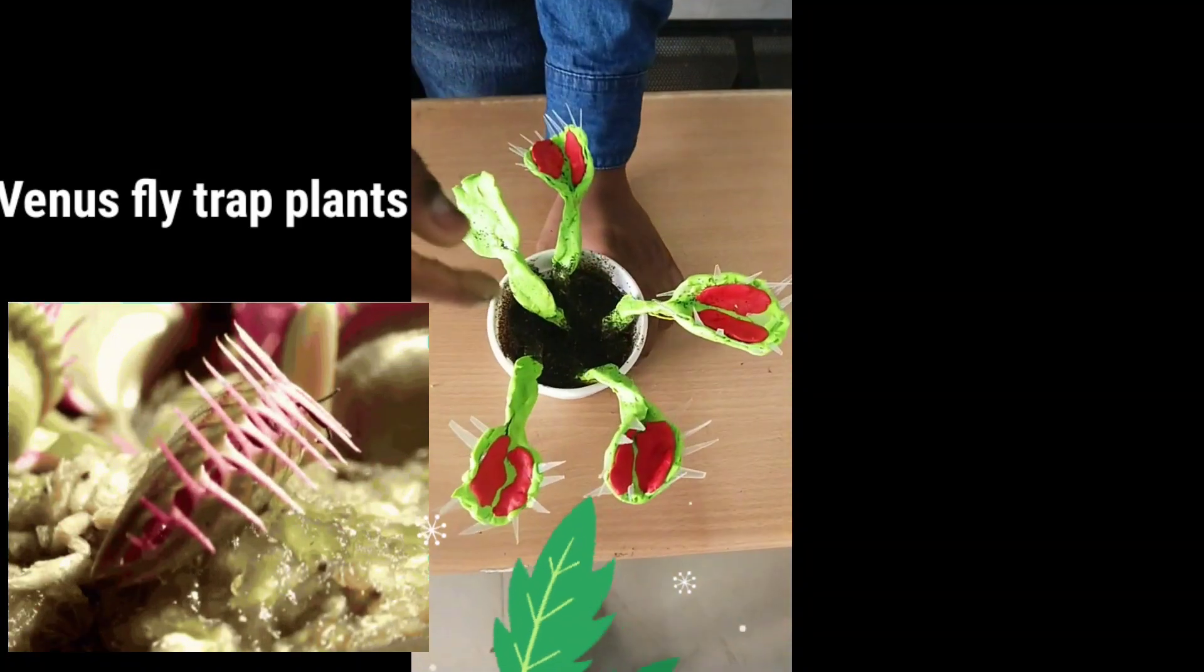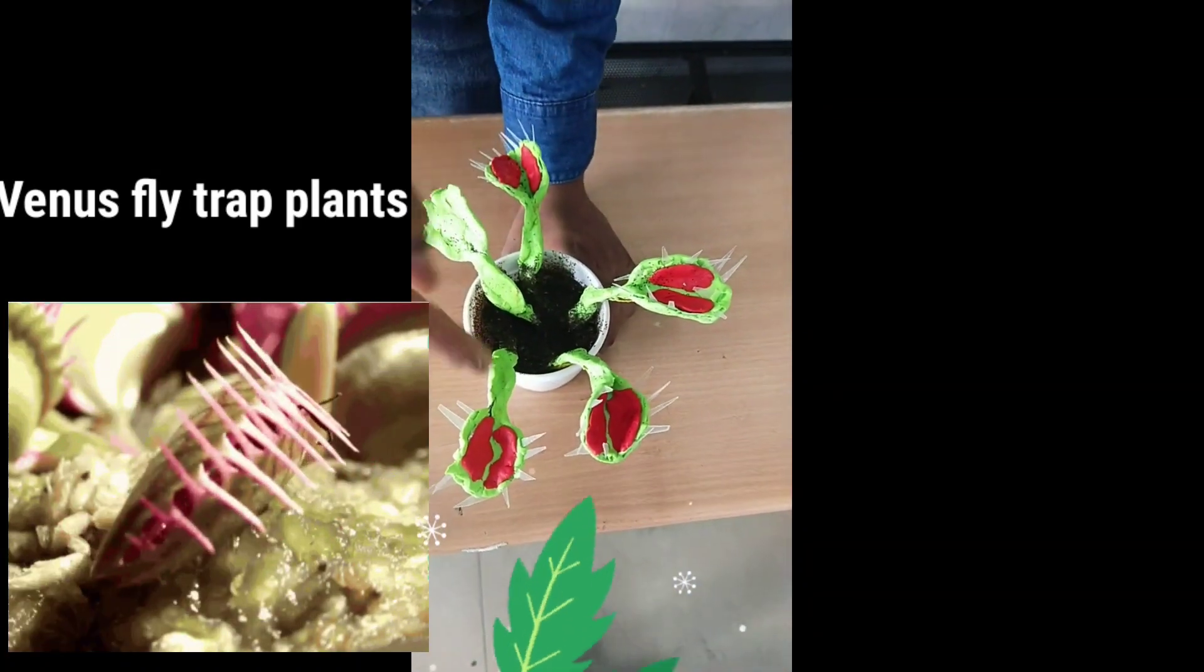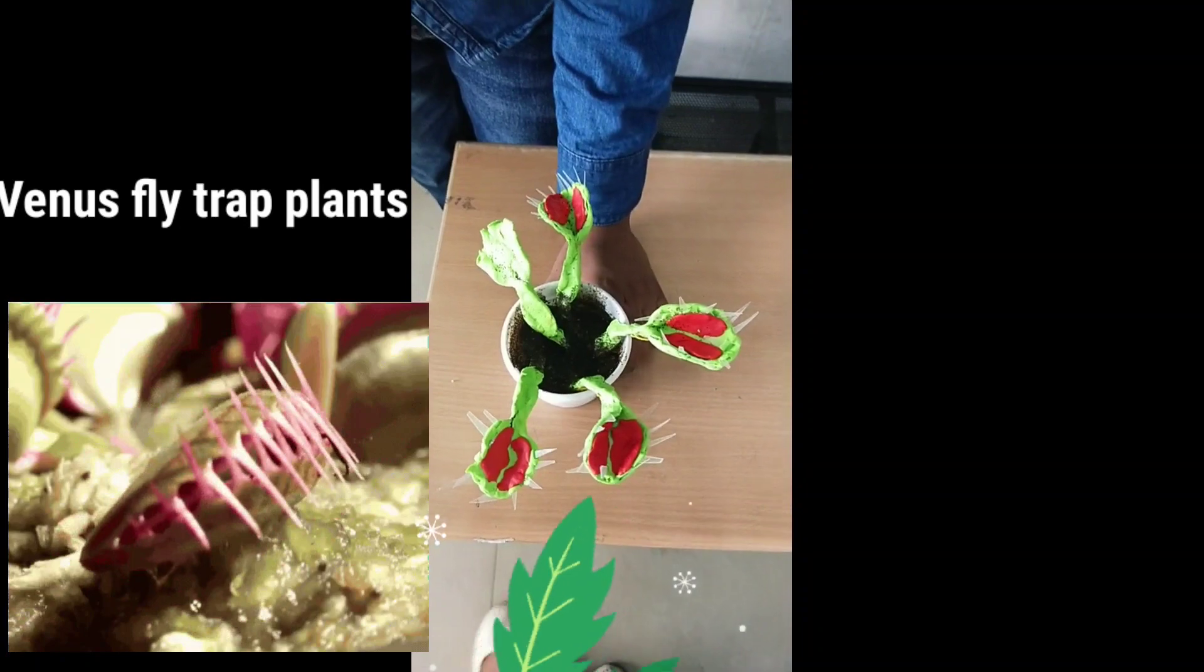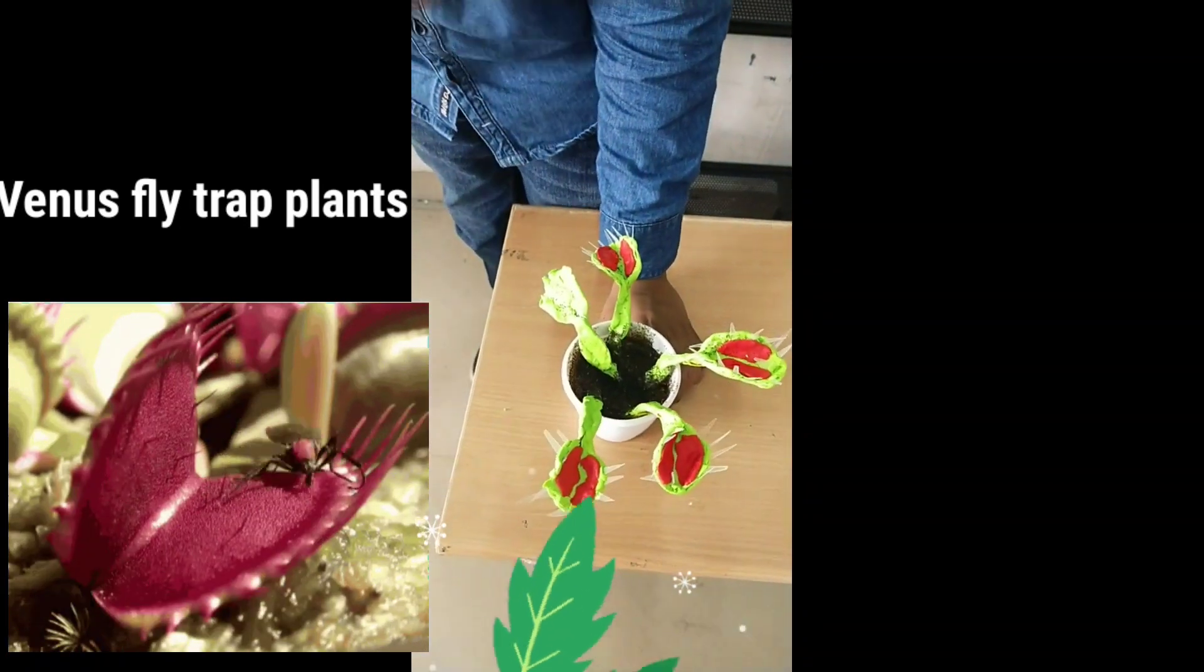Here is a Venus flytrap plant. The specialty of this plant is they trap the insect when they sit on it.